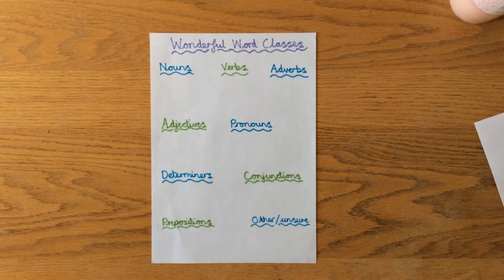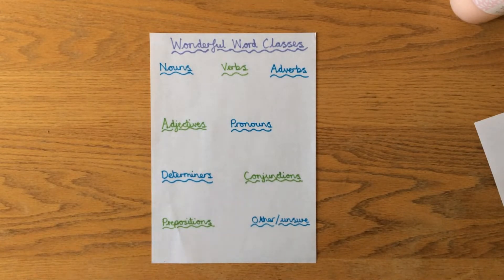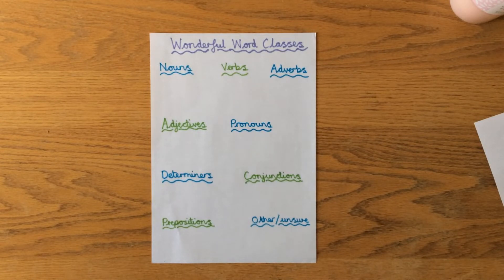So the very first thing I want you to do before opening your book is make a list something like mine. You can decorate it if you want, or you can just make a list on a piece of paper and leave a bit of space underneath each one, because in a minute you're going to use these word classes and create a bit of a tally chart by looking at the sentences in your book.